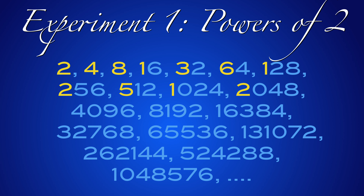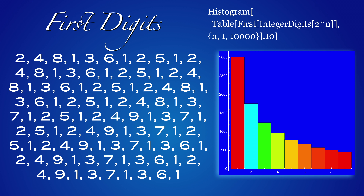You see here the first digits: 2, 4, 8, 1, 3, 6, 1, 2, 5, 1, 2, etc. Here are more. A small computer program allows us to make statistics. We see that the number 1 appears more frequently than does number 2 or 3. The picture does not change much when taking larger numbers.